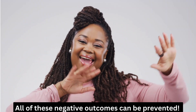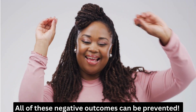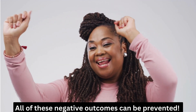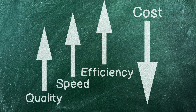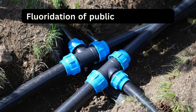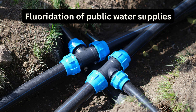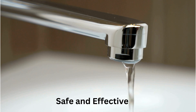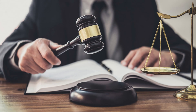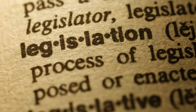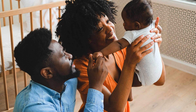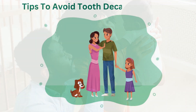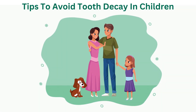The good news is that these negative outcomes of tooth decay can be prevented. So let's talk about prevention. The most economical measure to reduce dental caries in children is fluoridation of public water supplies, which has been shown to be safe and effective. However, this is not within the immediate control of parents and caregivers, so here are some important tips on what you can do at home to optimize oral hygiene and prevent tooth decay.